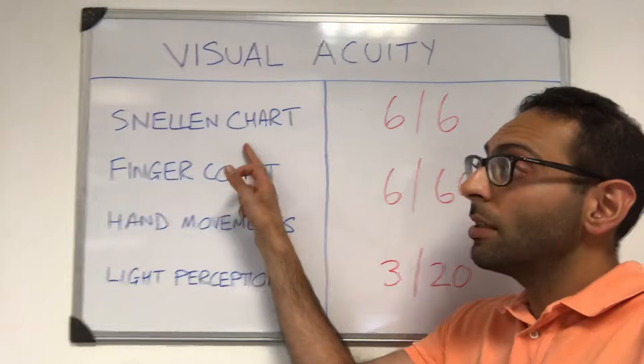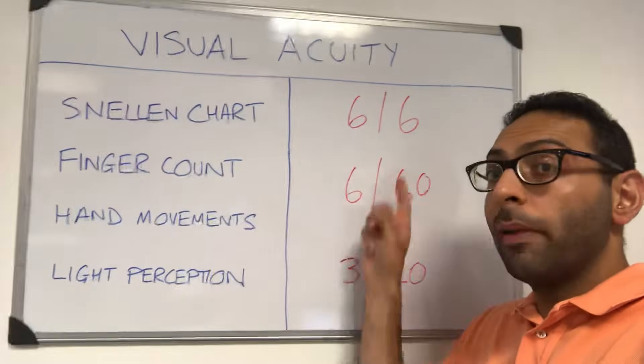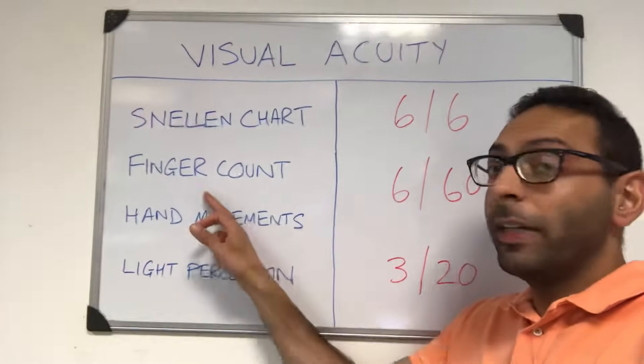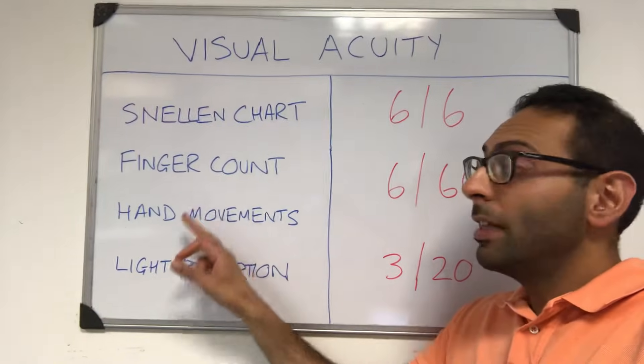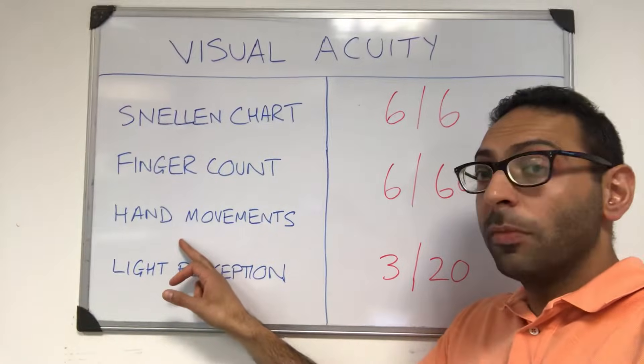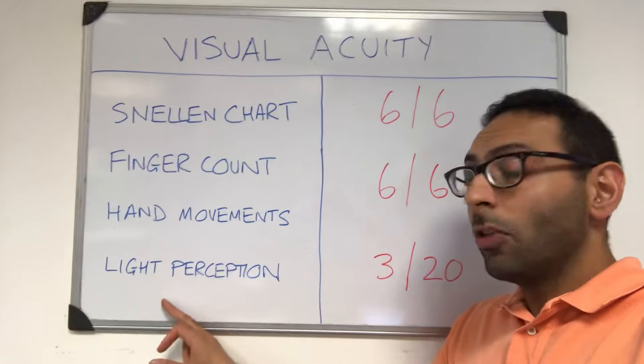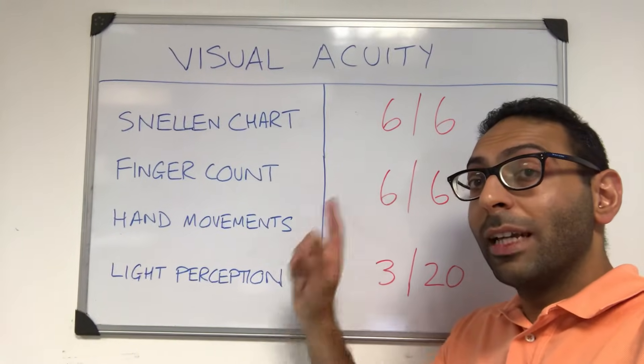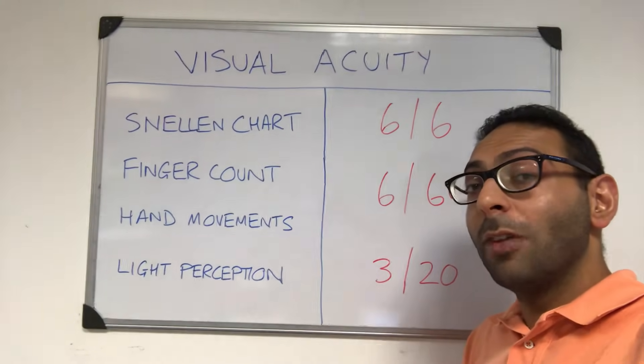So to summarize: you start with Snellen charts and numerical values, then finger counting, then hand movements, then light perception. Visual acuity in a nutshell — hope this helps.